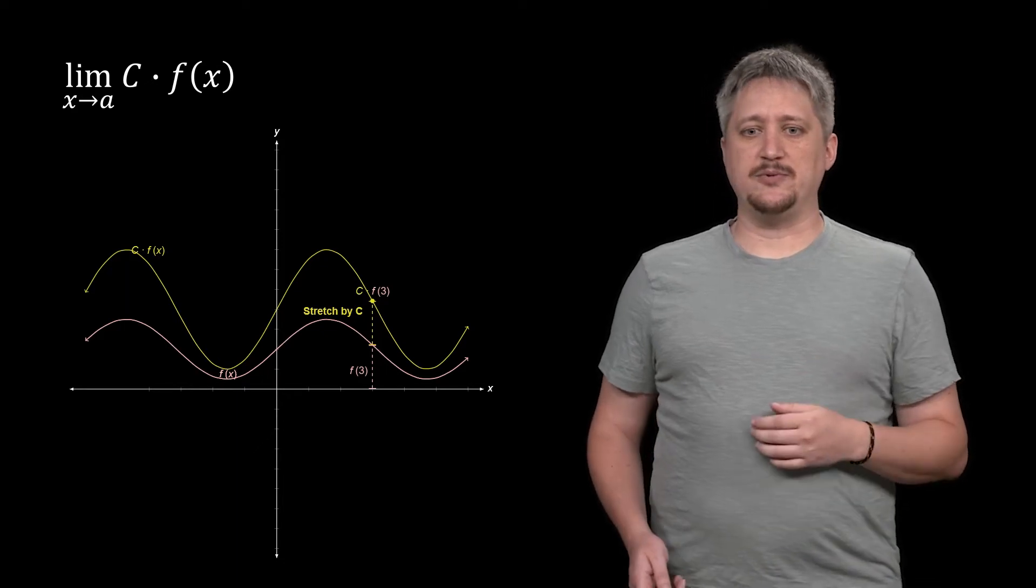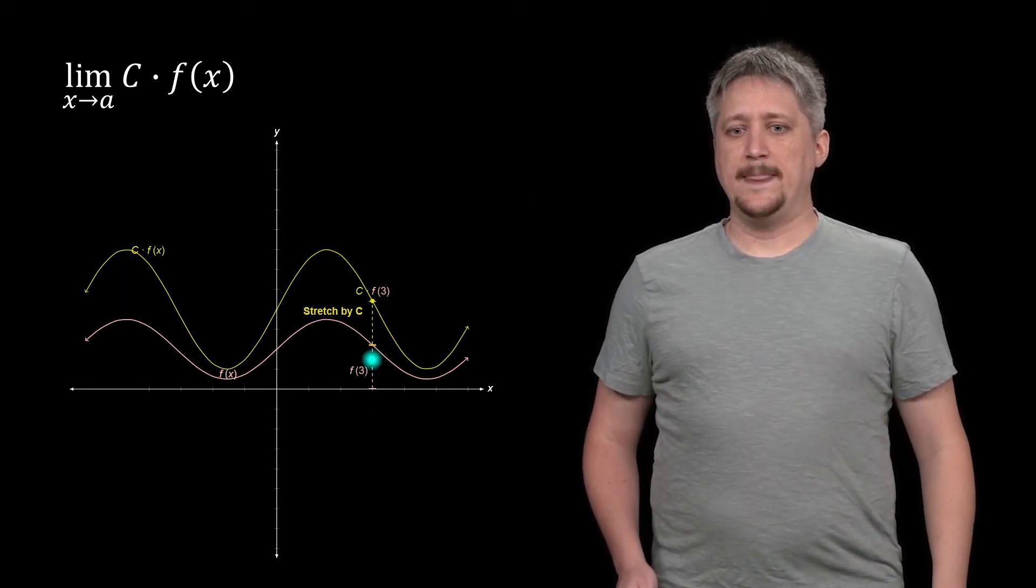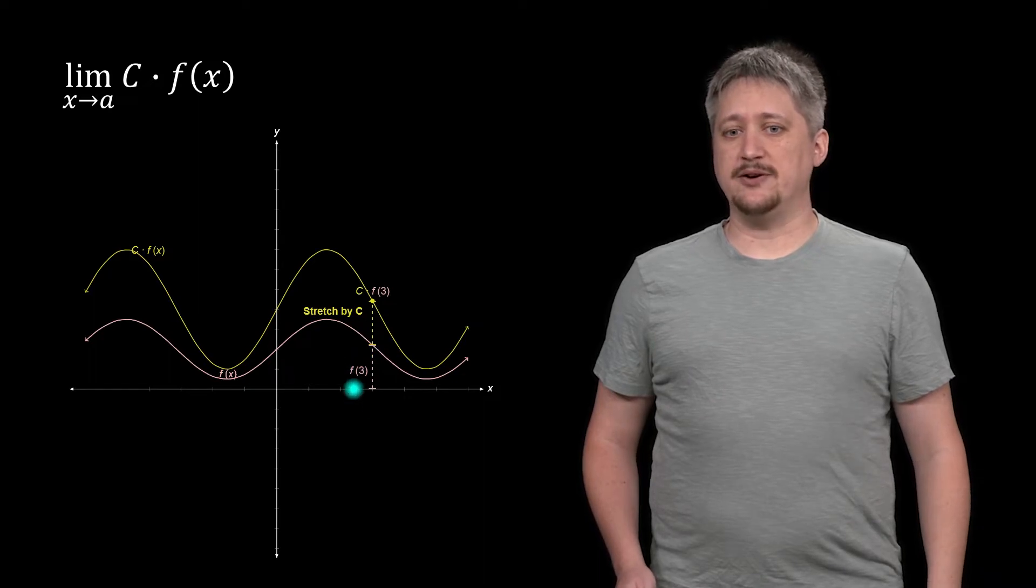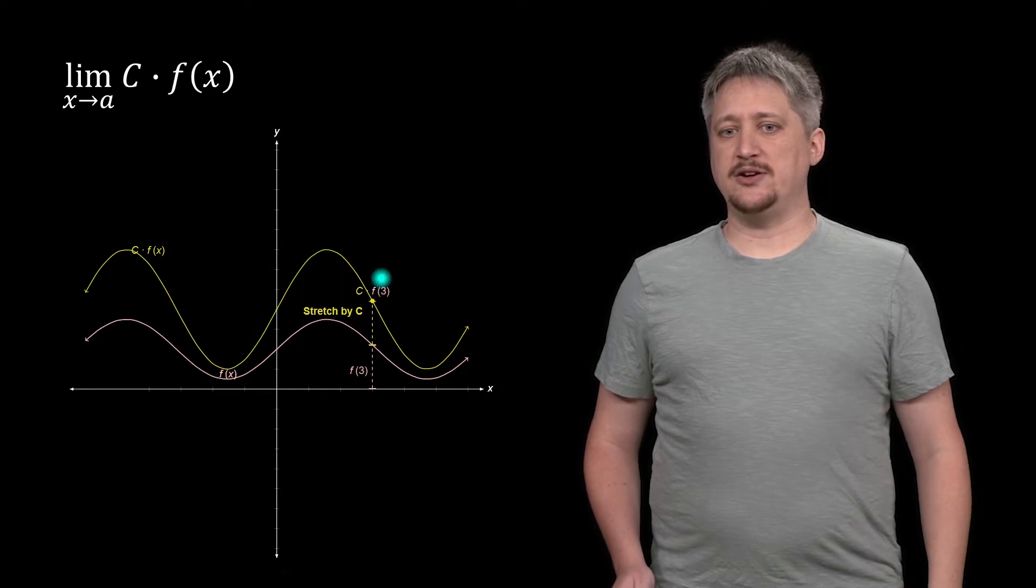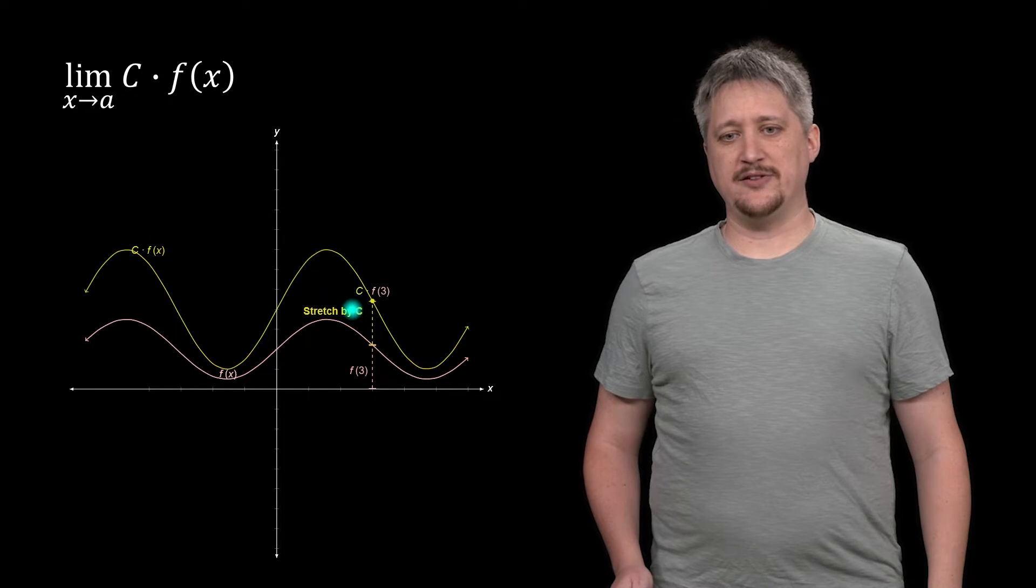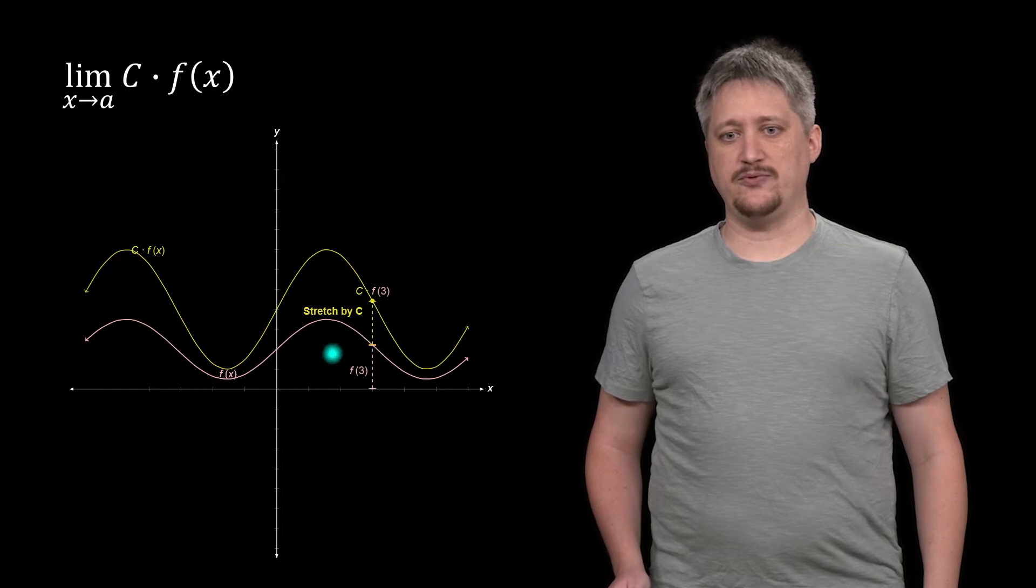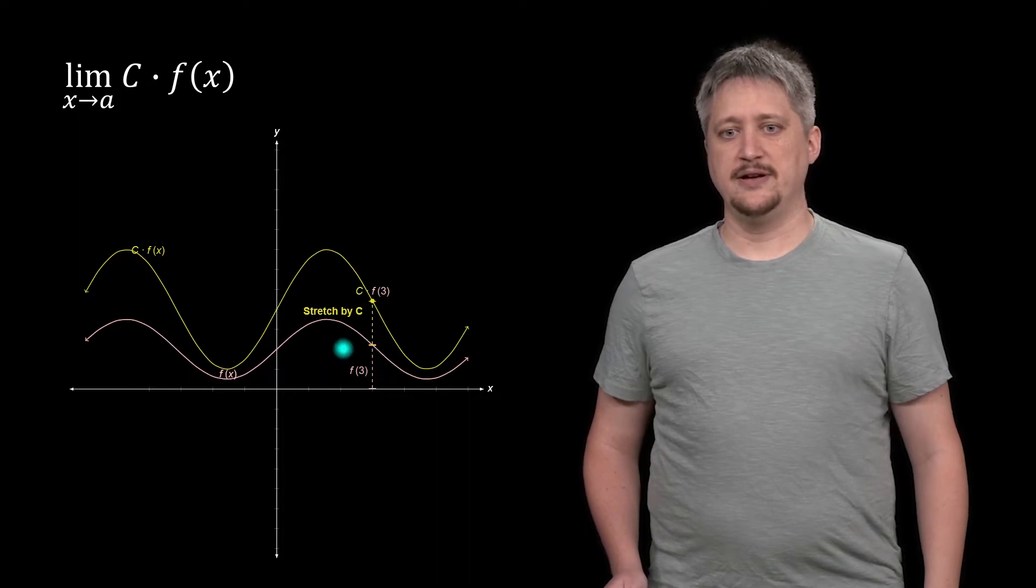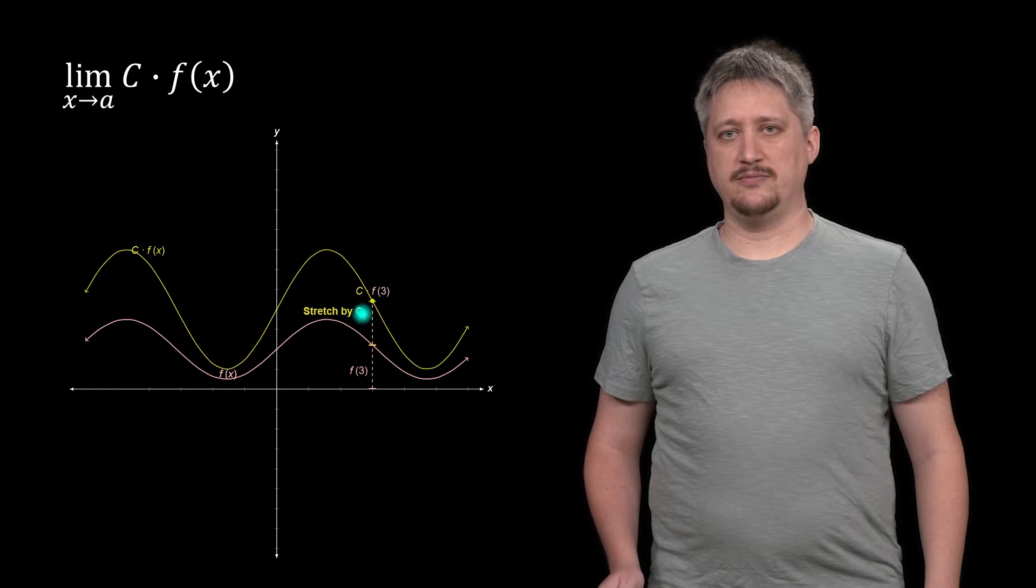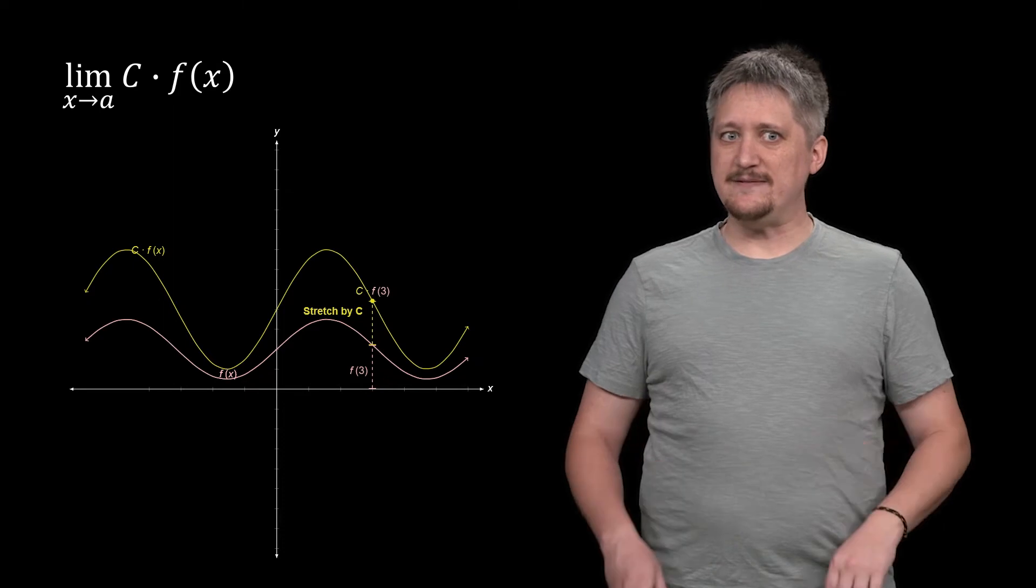For example, we have this f(3) right up here, and when we multiply it by c it goes up to here. But what we care about is the limit: as we come from the left and from the right, are we going to the same spot? If that's true for f(3), that's also going to be true for c times f(3) because we're still multiplying the nearby points by that same c factor.